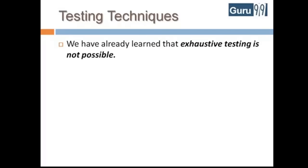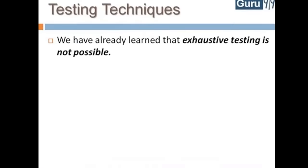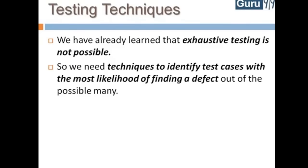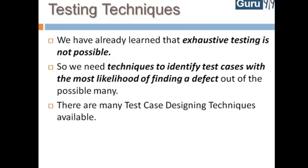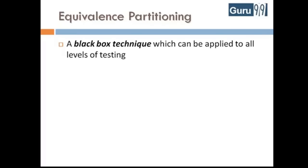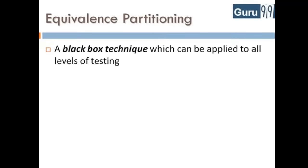We have already learned that exhaustive testing is not possible. So we need techniques to identify test cases with the most likelihood of finding a defect out of the possible many. There are many test case designing techniques available. Equivalence Partitioning is a black box technique — meaning the code is not visible to the tester — which can be applied to all levels of testing like unit, integration, and system. In this technique, you divide a set of test conditions into partitions that can be considered the same.